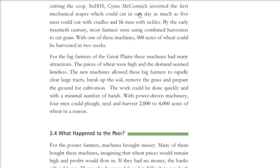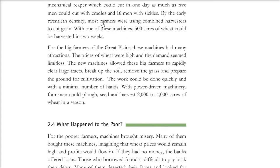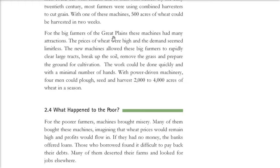In 1831, Cyrus McCormick invented the first mechanical reaper. This mechanical reaper could cut in one day the same amount of crop that 16 men with sickles would do. With these machines, 500 acres of wheat could be harvested in just 15 days — 2 weeks. The new power-driven machinery meant that only four men could plow, seed, and harvest 2,000 to 4,000 acres of wheat in just one season.